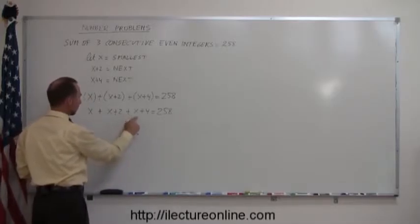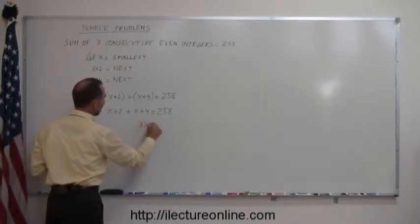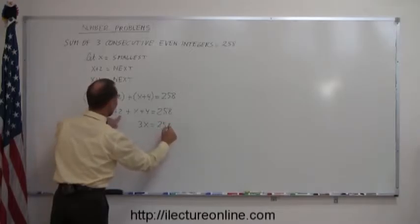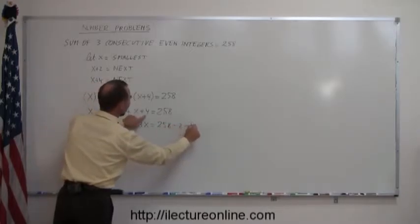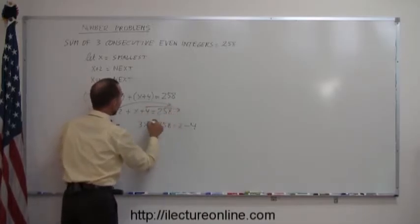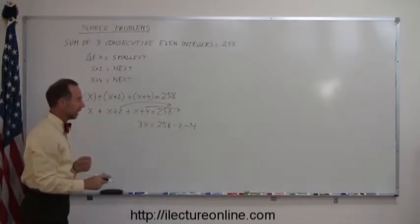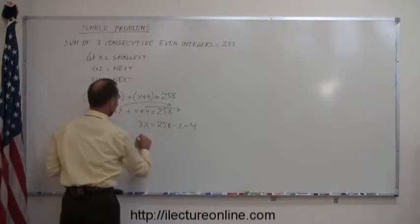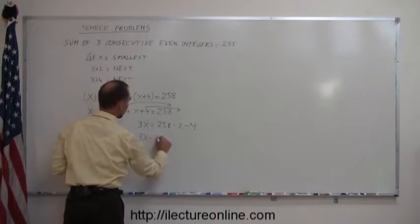I have an x plus an x plus an x. I have 3x on the left side equals 258 minus 2 minus 4. Remember, whenever I move numbers to the other side of the equation, I change the sign. I combine the numbers on the right side so I get 3x is equal to 258 minus 2 minus 4, that would be 252.